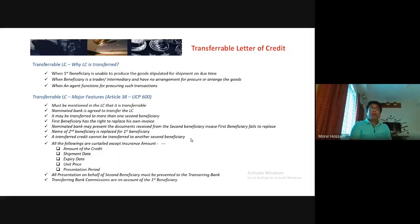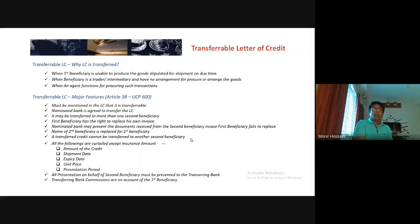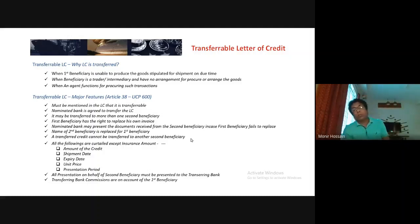But if the first beneficiary wants to replace its own invoice, there will be a scenario where the amount is reduced in the transferable credit. The shipment date will be earlier than the actual export credit, the expiry date will also be cut, the unit price will be cut, and the presentation period will be cut — because the first beneficiary's intention is to accumulate his own invoice and send the documents to the applicant for payment.